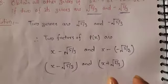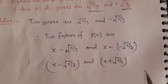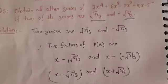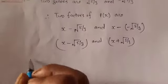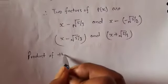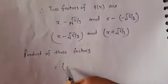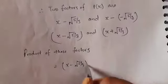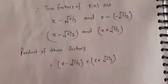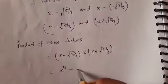We can find the other two factors, and from those two factors we can find the zeros by putting them equal to zero. So we will find the product of these two known factors. Multiplying (x − √5/3)(x + √5/3), this is of the form (a − b)(a + b), which simply equals a² − b².